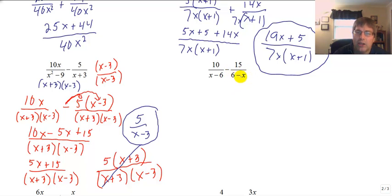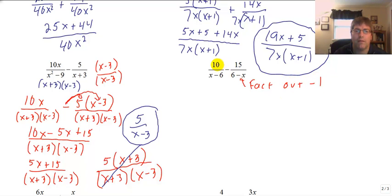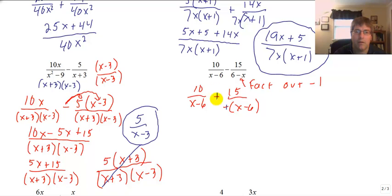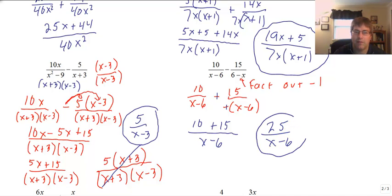Another subtraction problem with denominators x minus 6 and 6 minus x — these are opposites. The left denominator has a positive x and negative 6; the right has positive 6 and negative x. I factor out a negative 1 from the right denominator, giving 10 over (x-6) minus 15 over the opposite of (x-6). Minus a minus becomes a plus, so I get 10 + 15 all over (x-6). Final answer: 25 over (x-6).